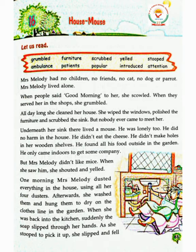Hello students, today we will read chapter number 16 of English House Mouse. Let us read the given words: GRUMBLED, FURNITURE, SCRUBBED, YELLED, STOOPED, AMBULANCE, PATIENTS, POPULAR, INTRODUCED, ATTENTION.